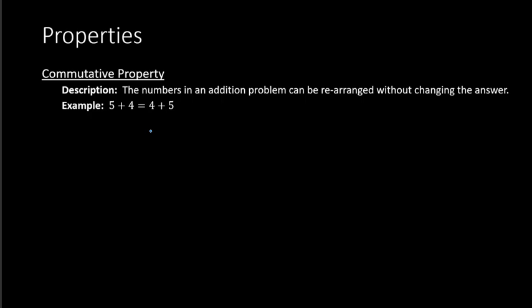In math notation, we can replace the numbers 5 and 4 with the letters A and B, where A and B are just representing any number. So here we see in math notation, A plus B equals B plus A. The order of the numbers are changing.